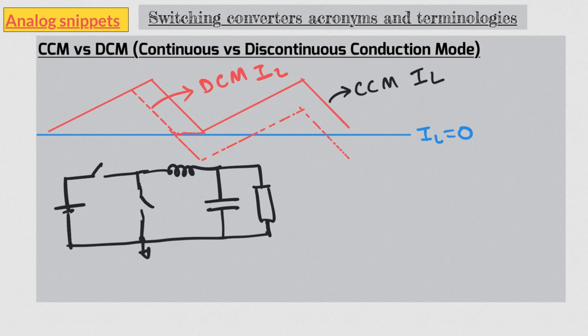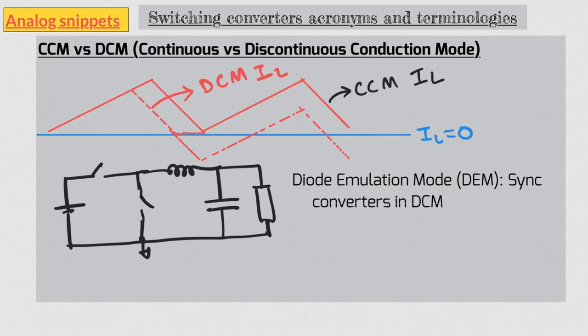Now this can give you an impression that synchronous converters probably cannot operate in DCM, but that is not true. You can detect the zero cross of the inductor and depending on that you can turn off the low side switch. Sometimes this kind of operation is known as diode emulation mode, and it is because we are trying to emulate a diode behavior using a bi-directional switch. On the other hand, the always CCM mode is also known as reverse CCM or forced CCM mode. Okay, that is all about CCM and DCM in this video.